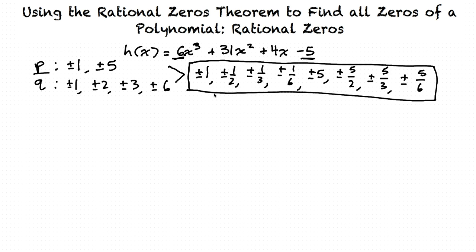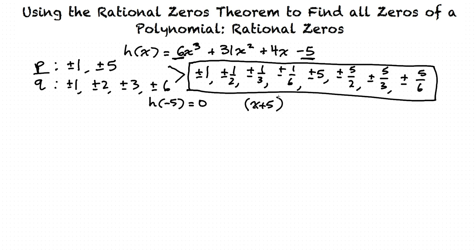We need to take each of these individually and plug them into h of x until we find one that causes h of x to equal 0. Doing this, I found that negative 5 is a zero for h of x, because if I plug negative 5 in for x in this polynomial, I'll get h of x equals 0. Therefore, negative 5 is a zero, and x plus 5 is a factor of this polynomial.